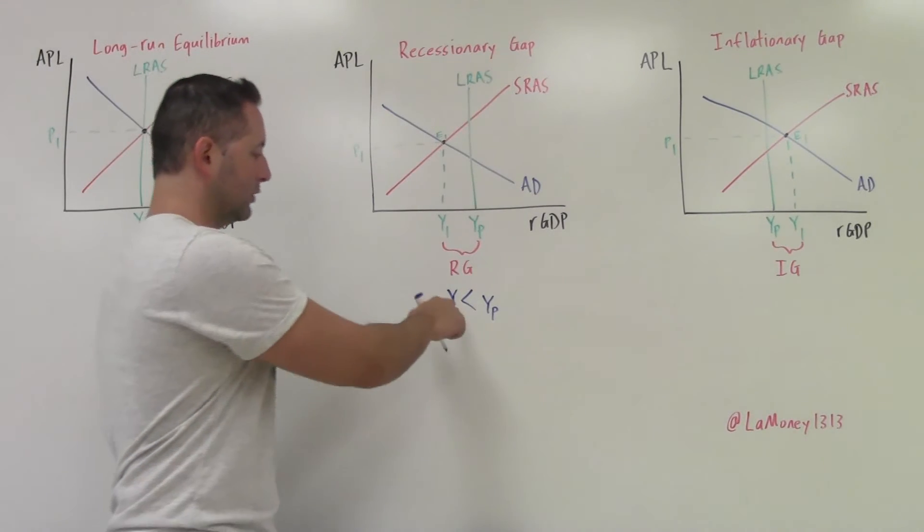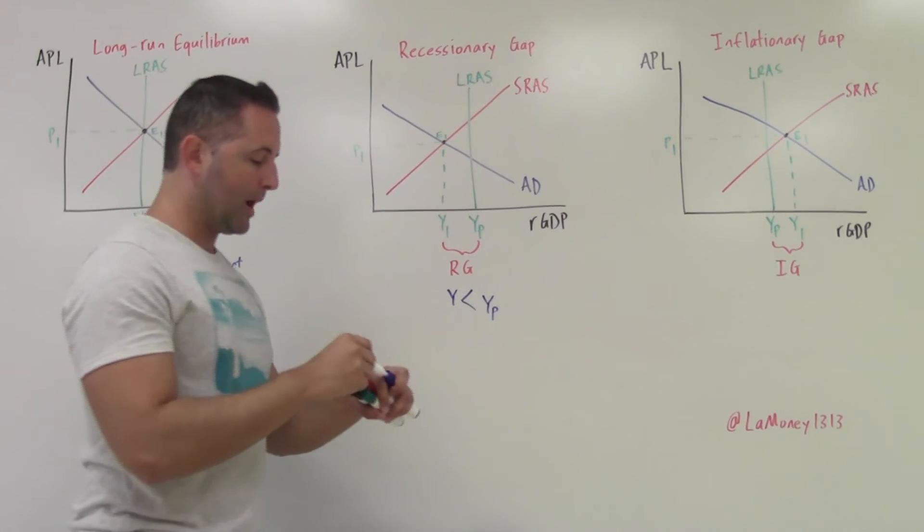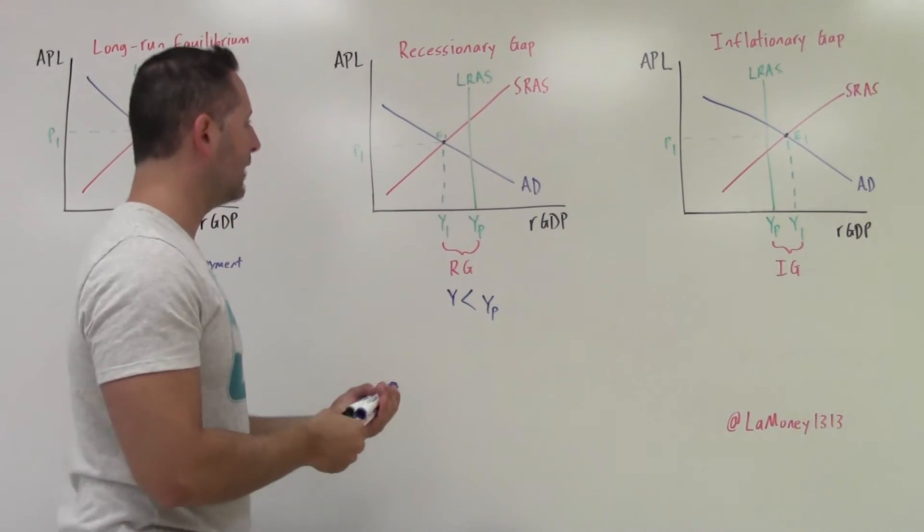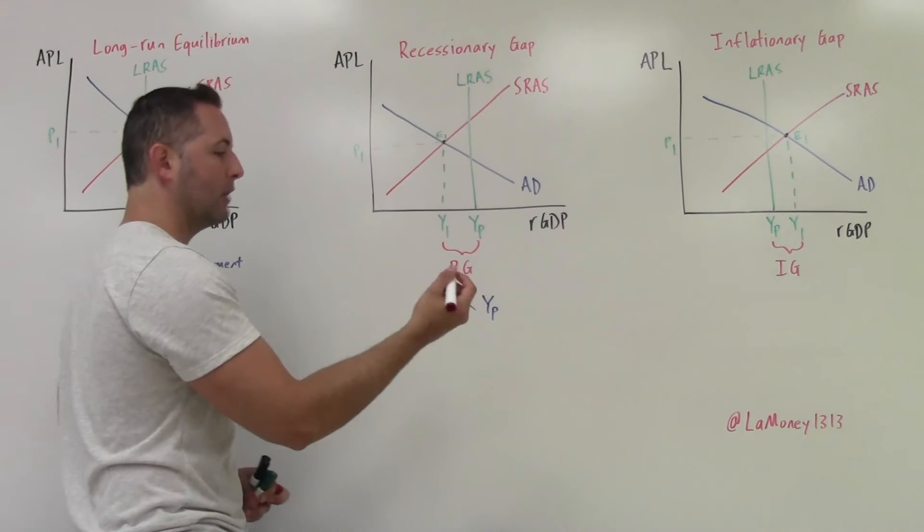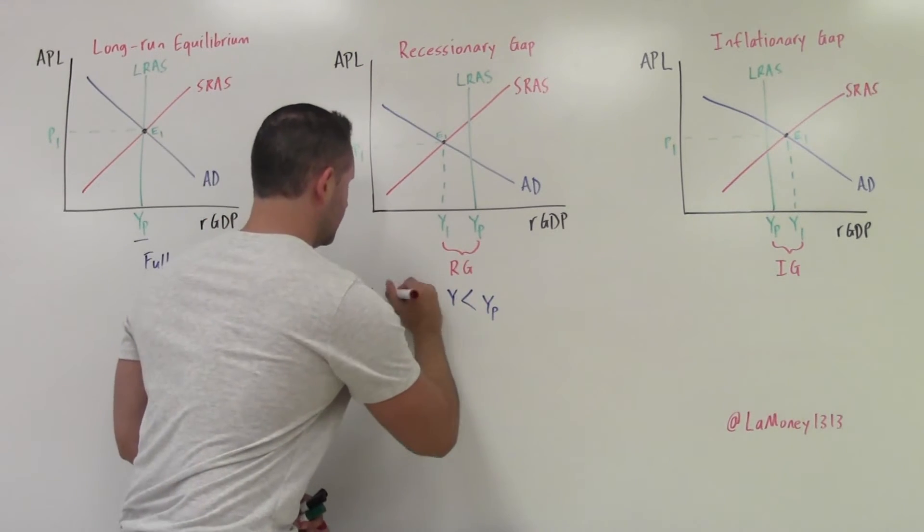The LRAS curve doesn't have to be dead center. That doesn't matter. The idea the reader or the grader will be looking for is, is that equilibrium to the left? And so what is that showing us? So it's showing us, first of all, that potential output is greater than actual output.